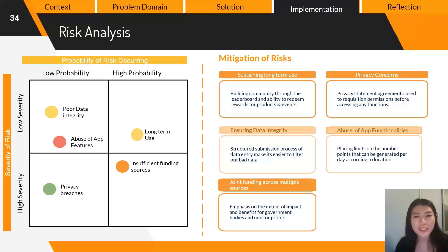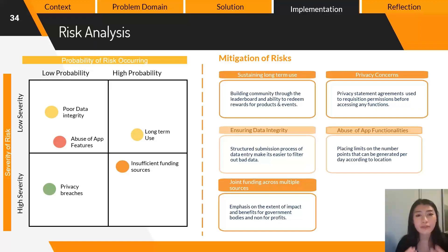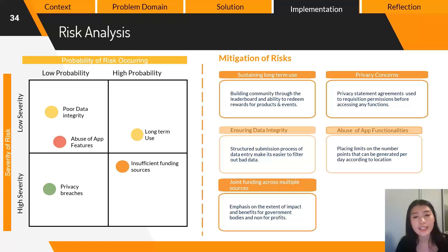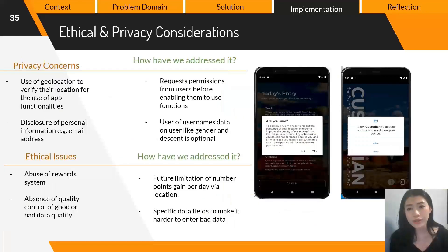Custodian faces risk within its initial rollout and future implementation. To minimize this, we have identified Tasmania as our test phase and initial rollout location — this ensures the wider reach is kept at a minimal standard where we can control the testing phase and resolve bugs quickly. Future implementation of the app is planned on a region-by-region basis rather than a national rollout. We have identified five risks across different privacy concerns to sustain long-term use and data integrity, and addressed these through a structured process within the app and a strong community amongst Custodian's users.